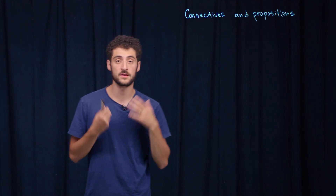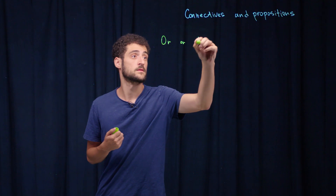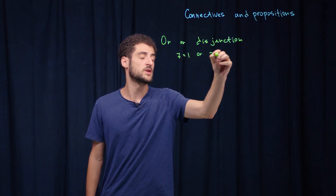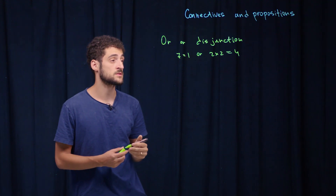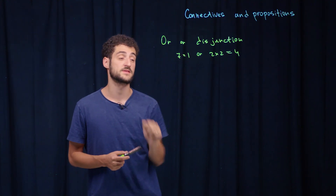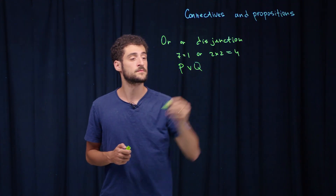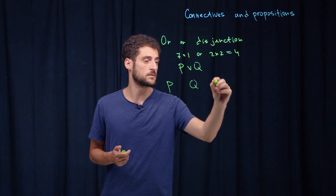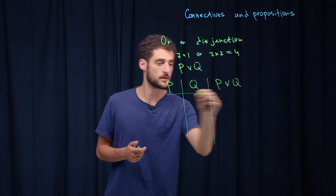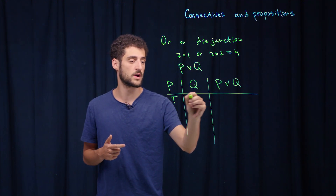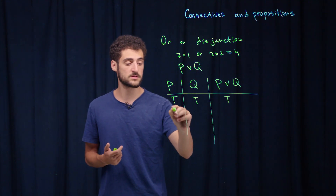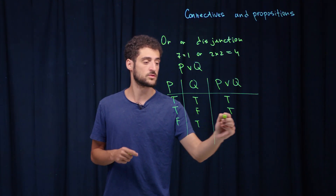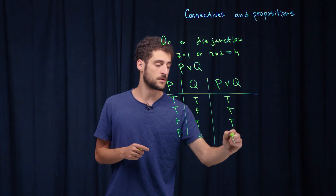The next example of a connective is OR, or disjunction. An example is '7 is equal to 1 OR 2 times 2 is equal to 4.' This statement is true since 2 times 2 is actually equal to 4. We denote it as p ∨ q. The truth values are: if p is true and q is true, their OR is true; if p is true and q is false, it's still true; if p is false but q is true, it's also true; and if both are false, the OR is false.